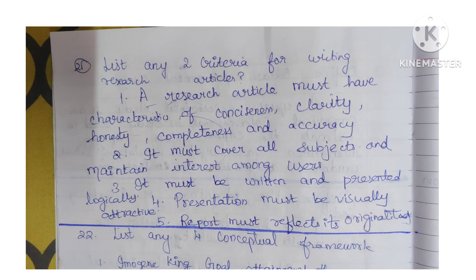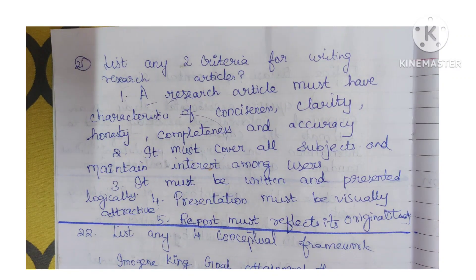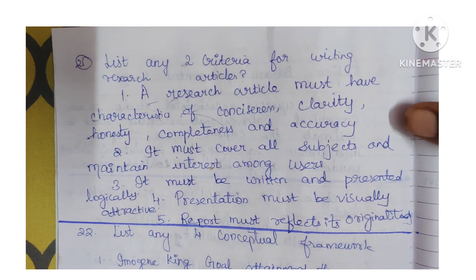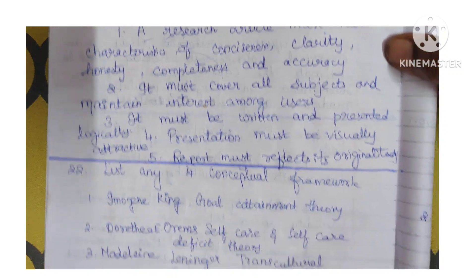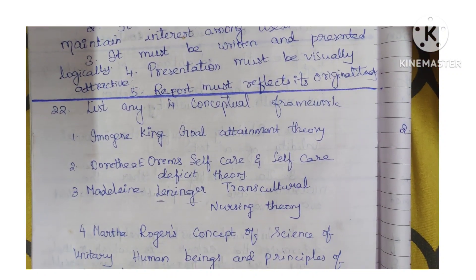This is not an explanation video — I am telling you what answers to write for each question. For explanation, I have posted detailed videos in our channel playlist for BSc Nursing Research and Statistics, covering 90% of the topics. Question 22: List any four conceptual frameworks — you have to write about the theories and models.